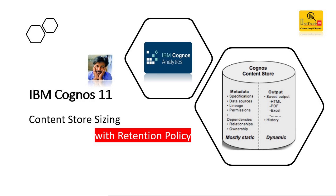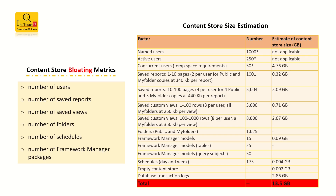Let's see in detail what causes your content store to grow bigger. The content store bloating matrix includes: the number of users, which matters a lot, and the number of saved reports against each user, number of saved views, number of folders, number of schedules, and number of Framework Manager packages. I've come up with an estimation factor — you can find this information in the IBM Cognos portal.